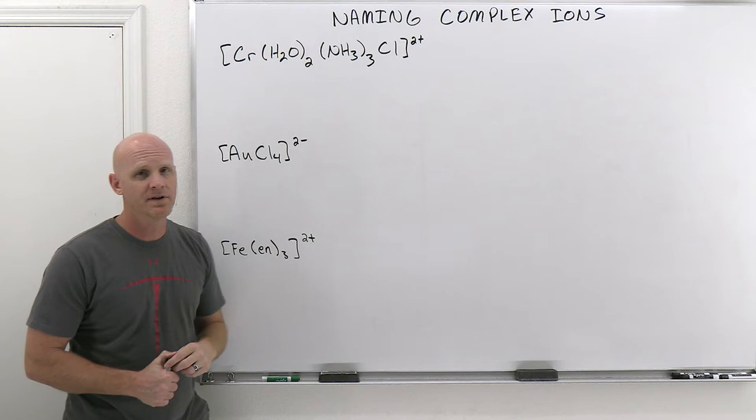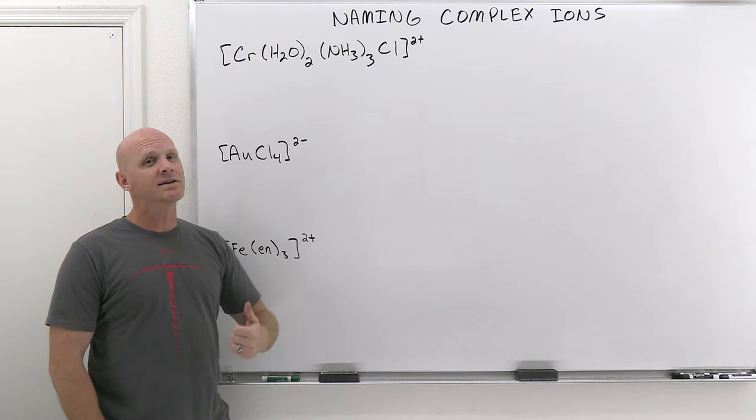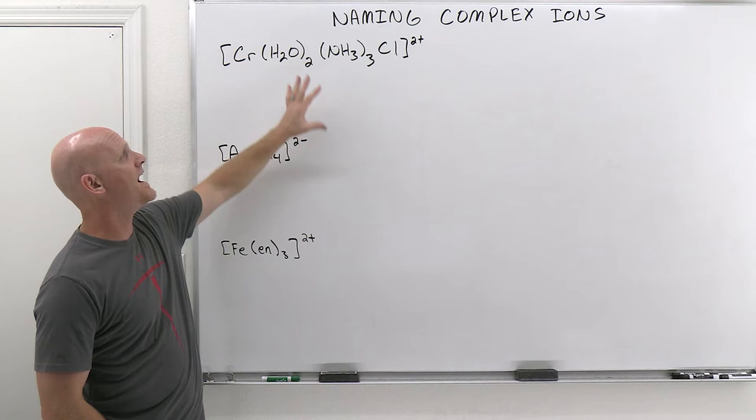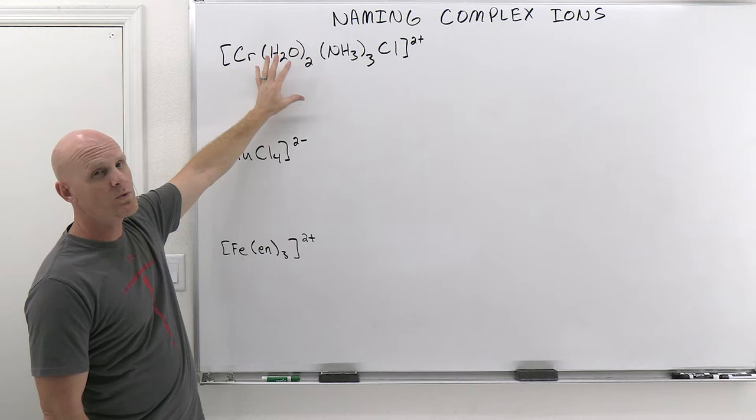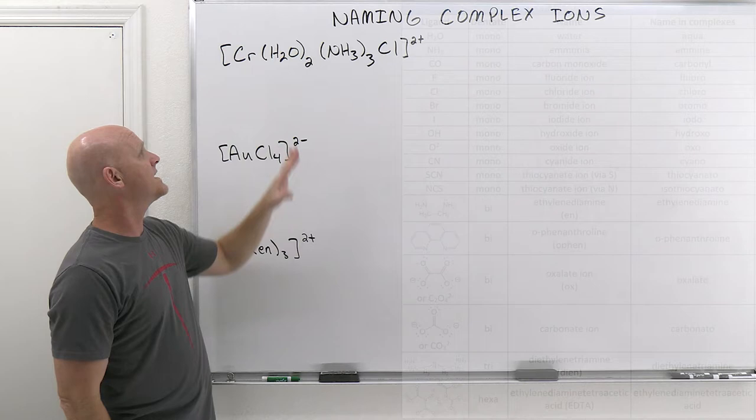Naming complex ions and coordination compounds — we're going to split this up into cations and anions. We're going to name both cations and neutral complexes the same way. In the formula we put the metal first and the ligand second, but in the name we put the ligands first and the metal at the end of that complex ion.